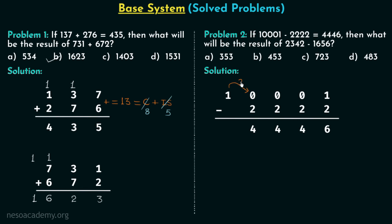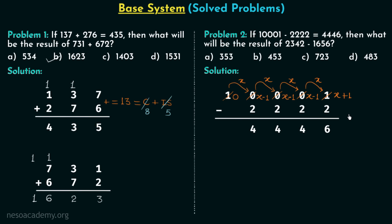So 1 gives x to the first 0, making it x; 1 minus 1 equals 0. Moving further, we give x to the next 0, making it x; x minus 1 remains. Then borrow x to the next 0, giving x plus 0 equals x and x minus 1. Finally we give borrow x to the 1 at the leftmost position, giving x plus 1 there and x minus 1. Now we can find the value of x, which is the base.